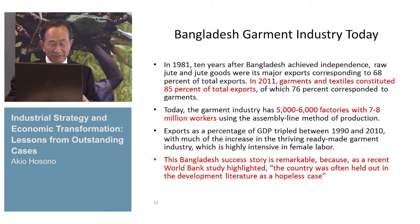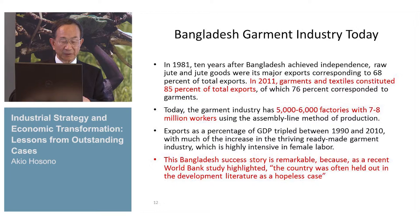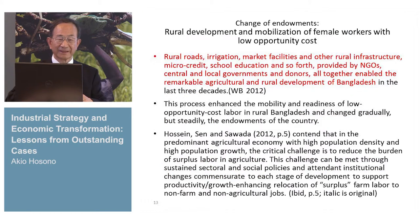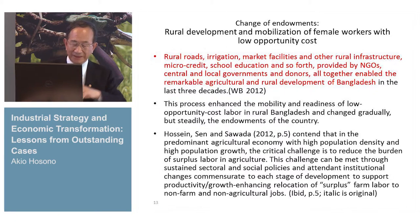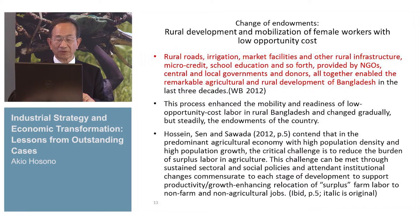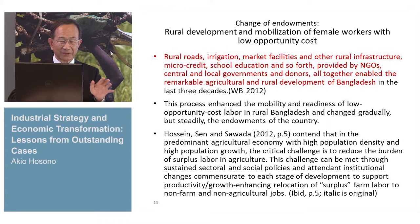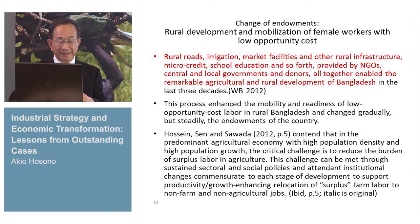The transformation is remarkable because, as a recent World Bank study highlighted, Bangladesh was often held out in the development literature as a hopeless case. How did the change of endowment happen? Rural roads, irrigation, market facilities, other rural infrastructure, microcredit, school education, and so forth. Central and local governments and donors together enabled remarkable agriculture and rural development. And on the basis of these changes in rural society, there was an accumulation of capabilities.